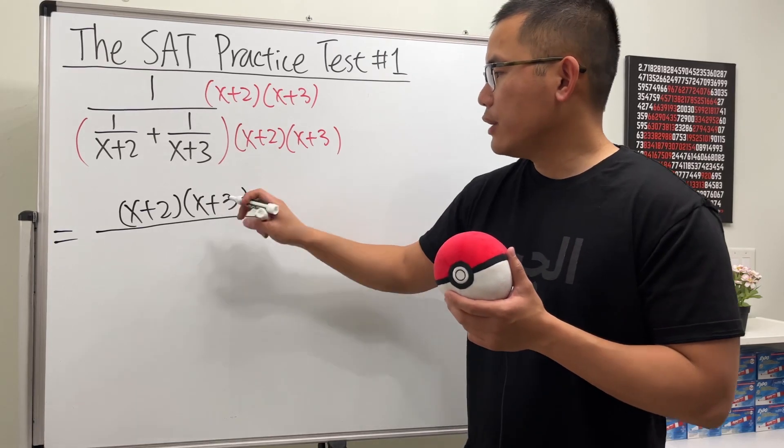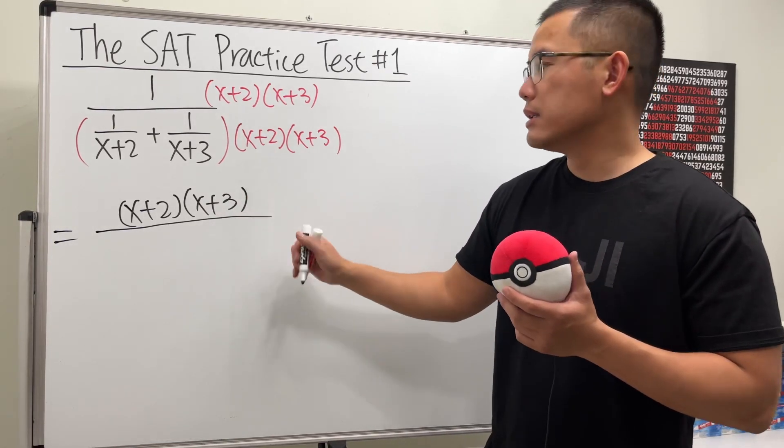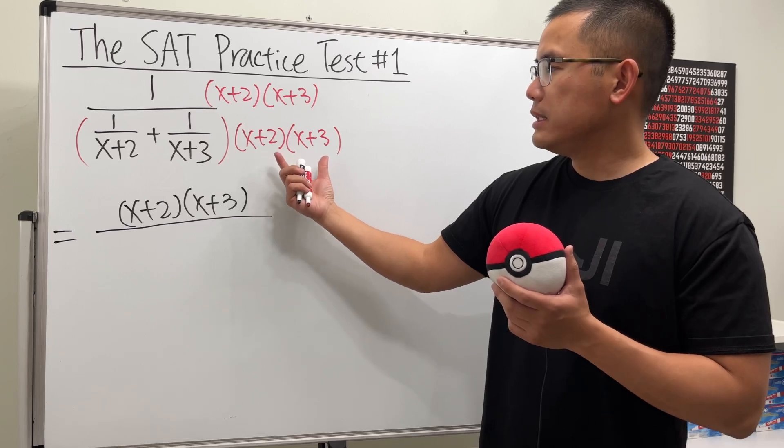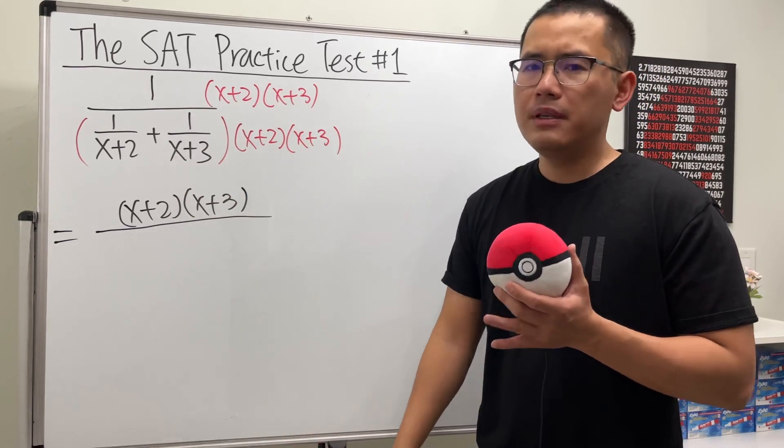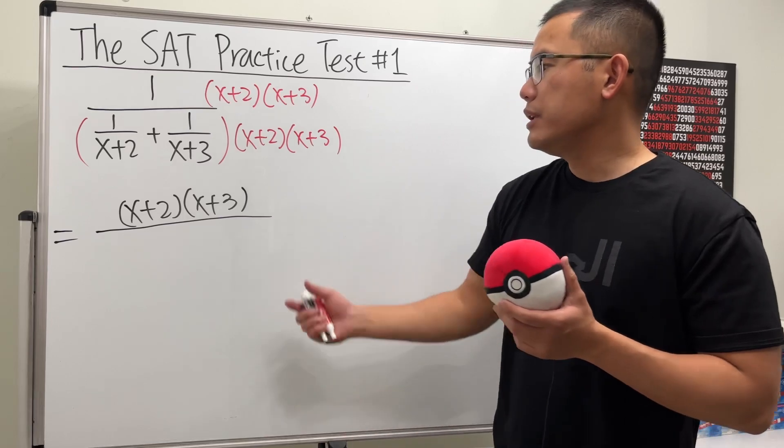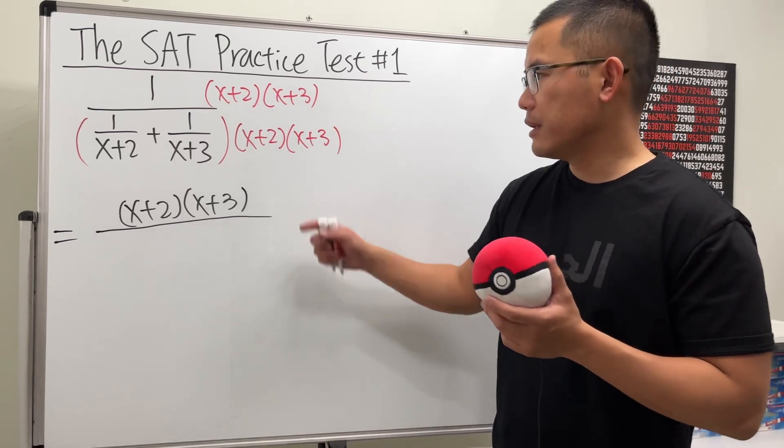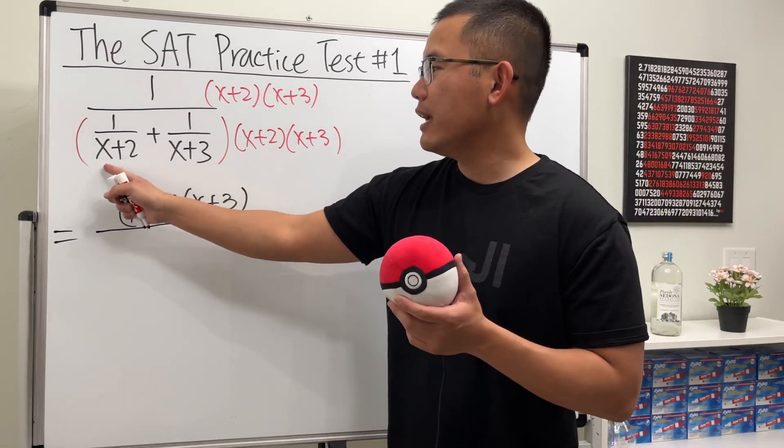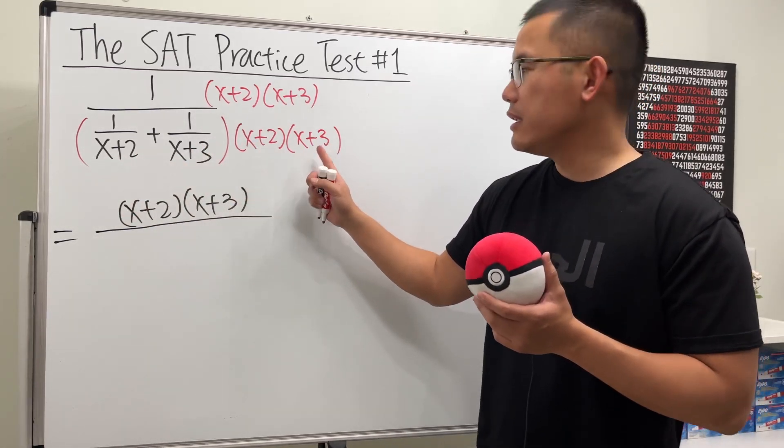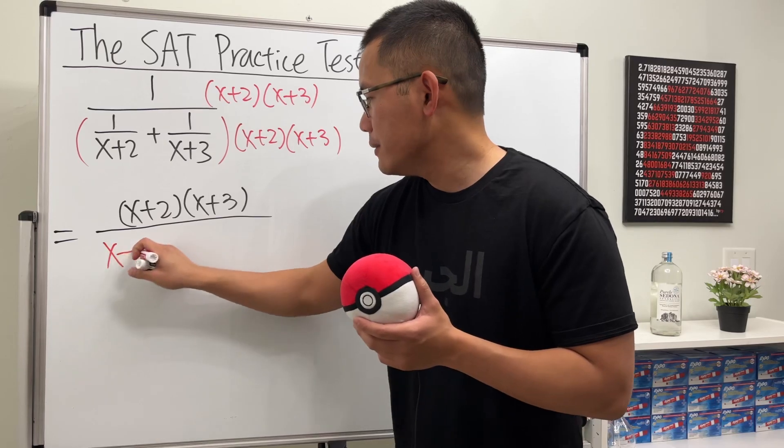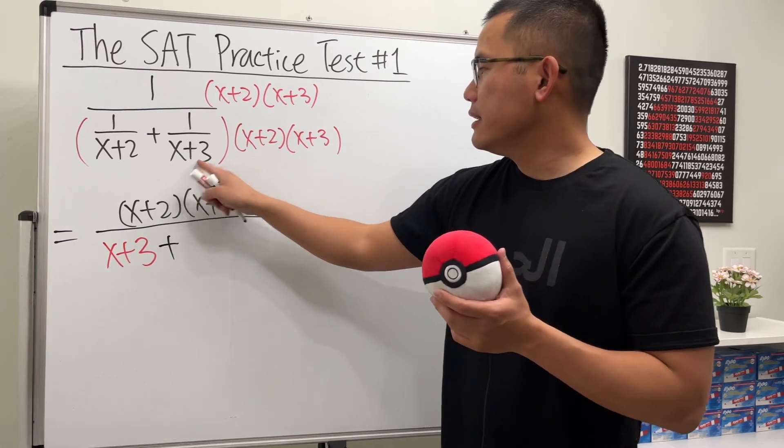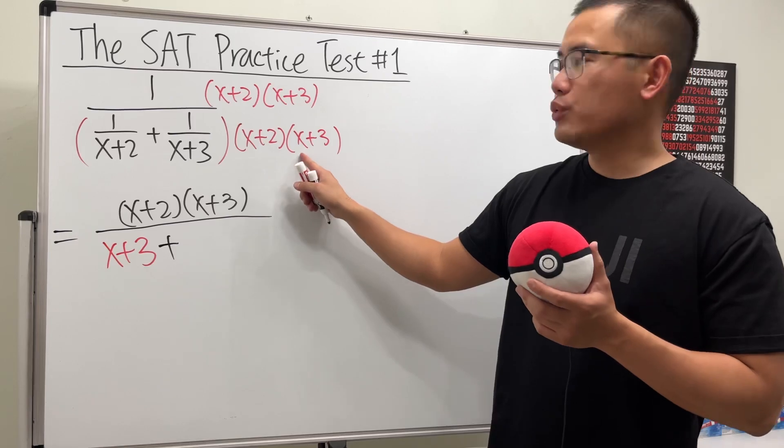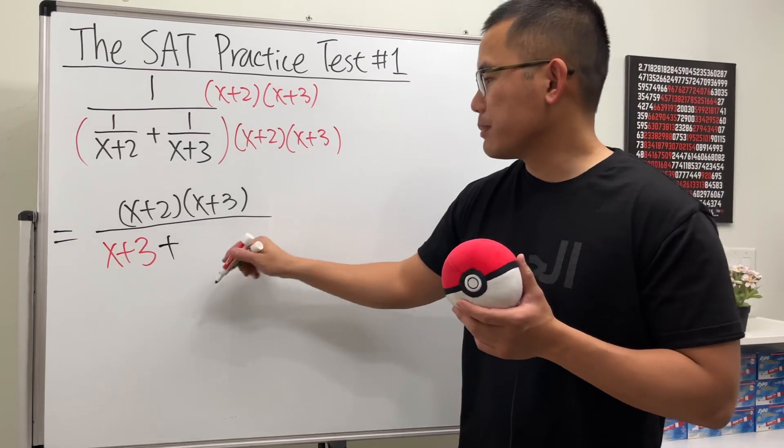The reason I keep this factored right now is because we shall see what will happen on the bottom, and maybe there's some cancellations. Here's the usual common mistake: take a look. When we take this times the first fraction, the x+2 will cancel, so we just get x+3. Then we add—take this times that, and the x+3 will cancel, so we'll just get x+2.